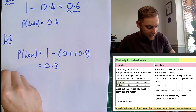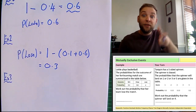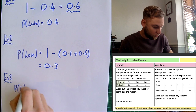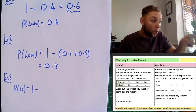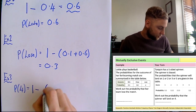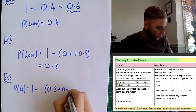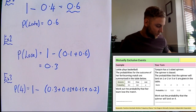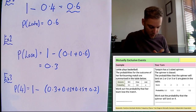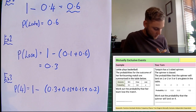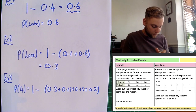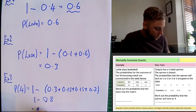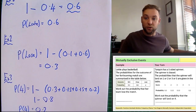This is example three. We know all probabilities sum to one, so the probability of getting four equals one minus all the other probabilities added together: 0.3 plus 0.15 plus 0.15 plus 0.15 plus 0.2, which equals 0.8. So the probability of getting a four is equal to 0.2.